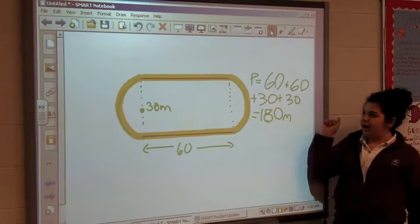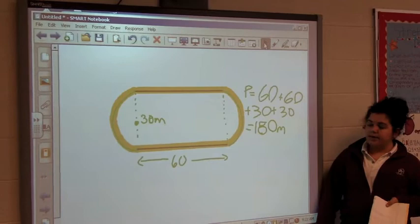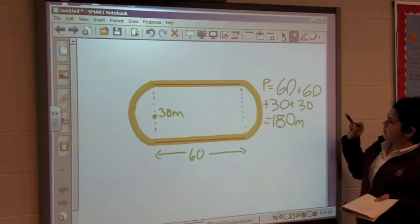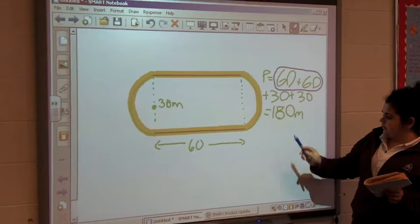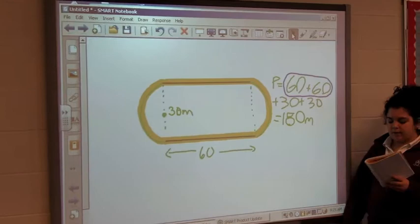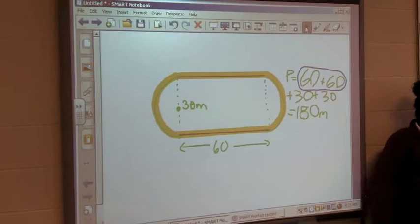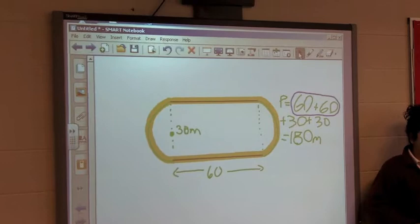To find the perimeter, I found I had to add all the sides together. So do you agree with what Michael wrote? No. Do you agree with parts of it? Yeah. Circle what parts you agree with. Why do you disagree with the 30 and the 30? Well, I had to add the extra 30 because you forgot one of them for the sidelines.